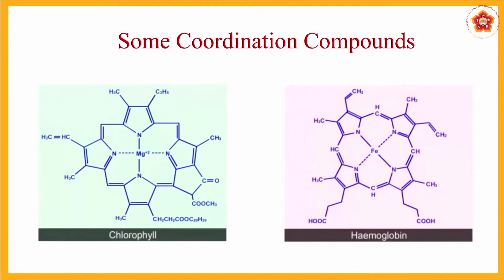The next set of compounds are important coordination compounds. You must have come across chlorophyll and hemoglobin from a very young age. Chlorophyll is the component in plants and hemoglobin is the component in blood. In chlorophyll the central metal ion is magnesium, with large surrounding structures that cannot ionize. In hemoglobin the central metal part is iron, and all others associated with it are large structures which cannot dissociate in solution. These are general day-to-day examples of coordination compounds.